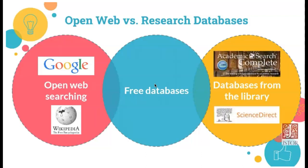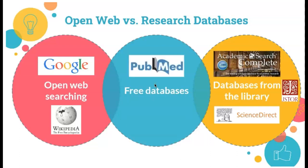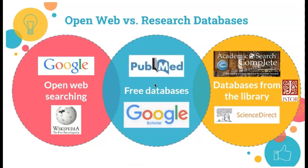Library databases, on the other hand, hold some of the most authoritative, scientific, credible information that has usually gone through a rigorous peer-review process before being published. These databases are paid for by the library, but as a CSUB student, you have free access during your time here to some of the best information available. There are also some research databases freely found on the web, like PubMed and Google Scholar. These are limited and don't have as much information as a library with multiple databases, but they can be a great resource.